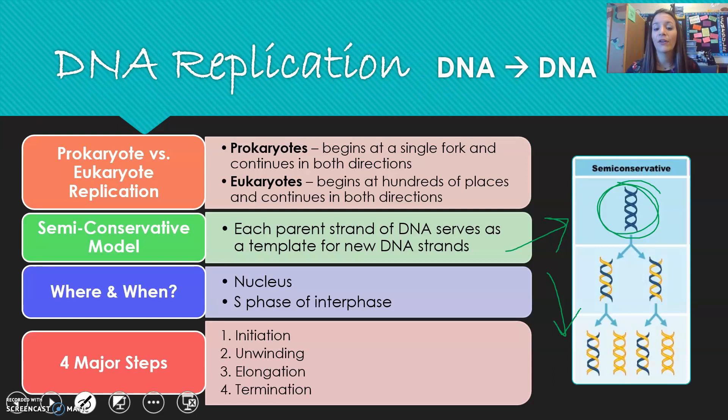There are four major steps of DNA replication you need to be aware of. First, initiation — you start the process. Then unwinding, where the DNA has to unwind before it can replicate. Then elongation, or growing that DNA chain. Finally, termination, or ending.